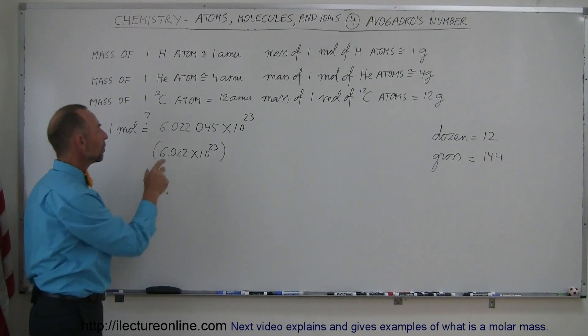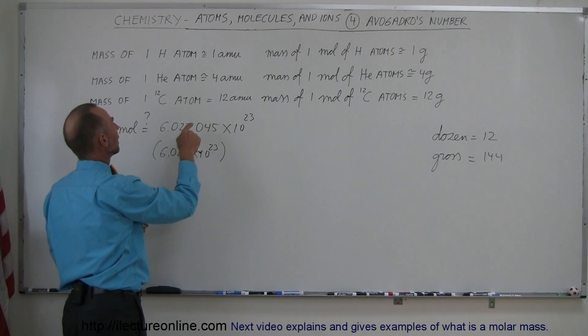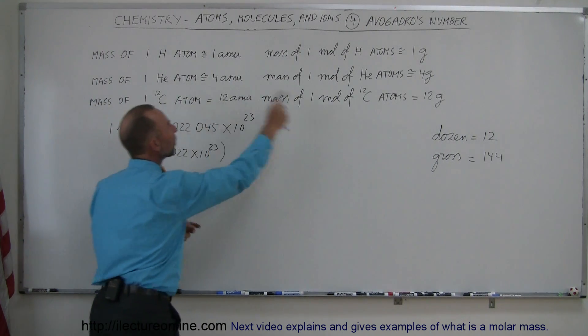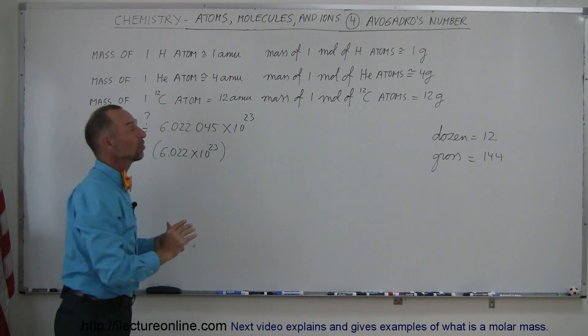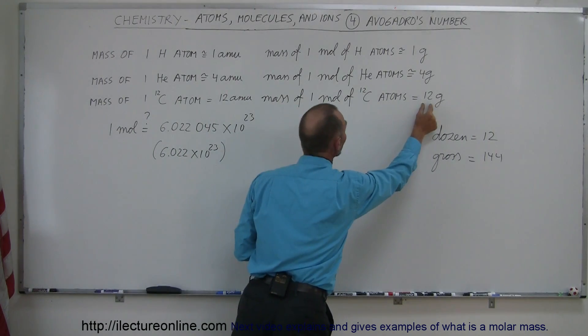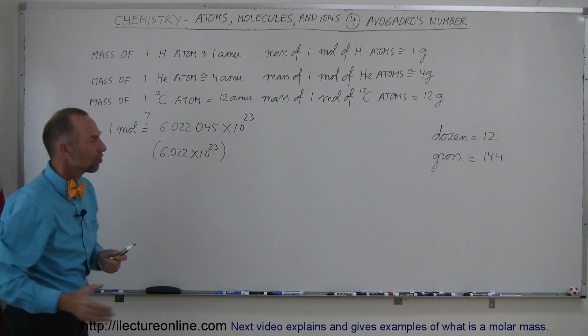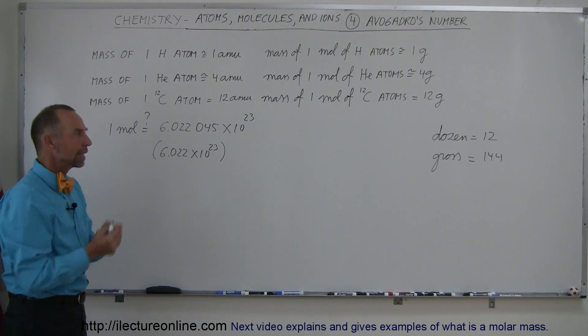So it's simply the number of molecules we want to multiply, or the number we want to multiply by to get the number of molecules or the number of atoms, or the number of anything such that the mass in grams is numerically equal to the mass in AMUs. So it's not mysterious, it's just something that we needed to make that conversion.